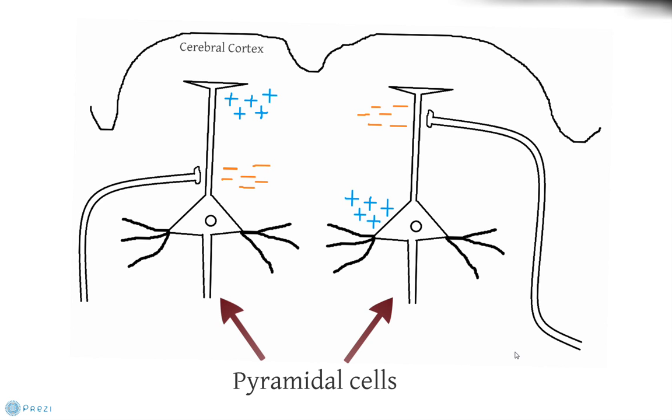When action potentials propagate along neurons, local currents are produced outside of the cell which facilitate propagation of the signal along the neuron. However, these currents are too small to be detected by EEG and the axons are arranged randomly so many of the currents cancel each other out.